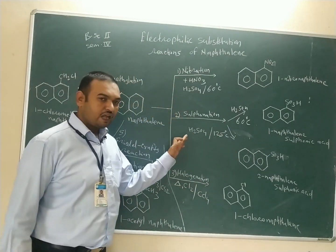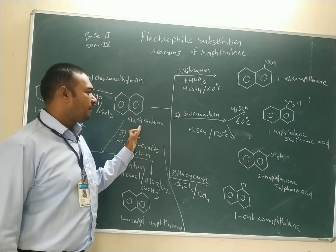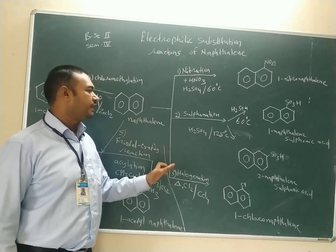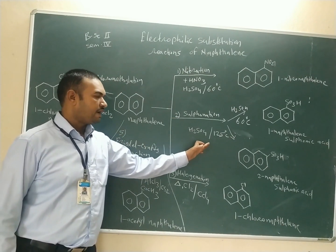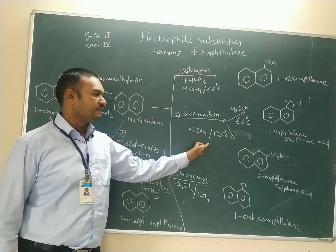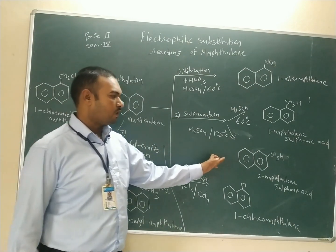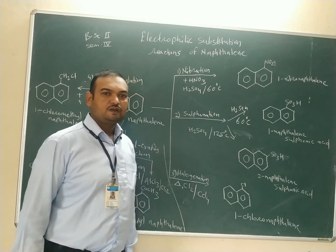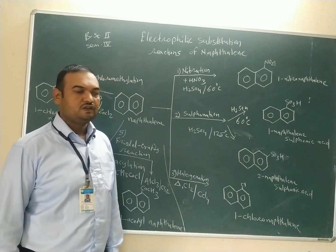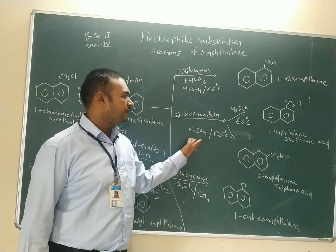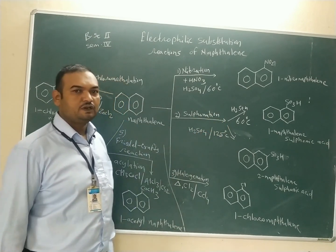At elevated temperature, naphthalene reacts with sulfuric acid. At 125 degree Celsius, it forms 2-naphthalene sulphonic acid. So we get two different products at two different temperatures.